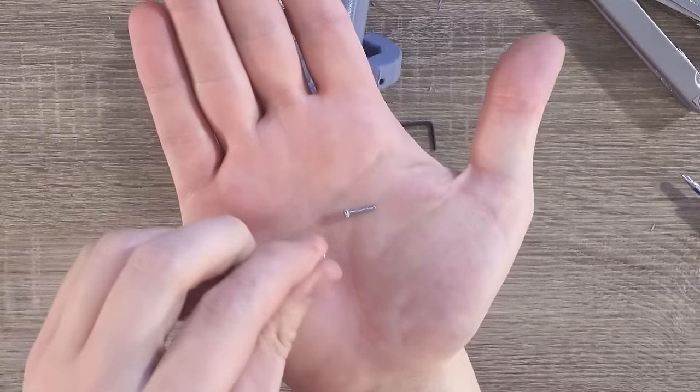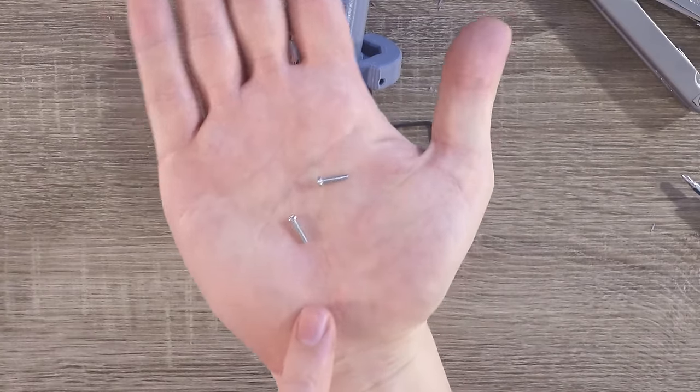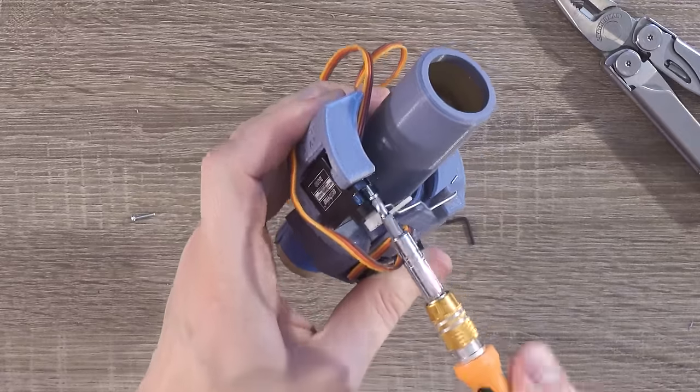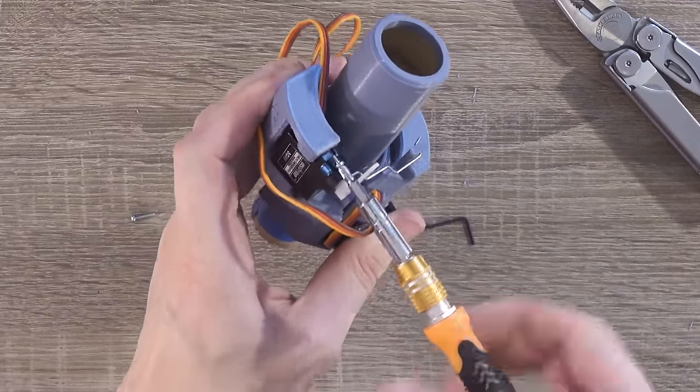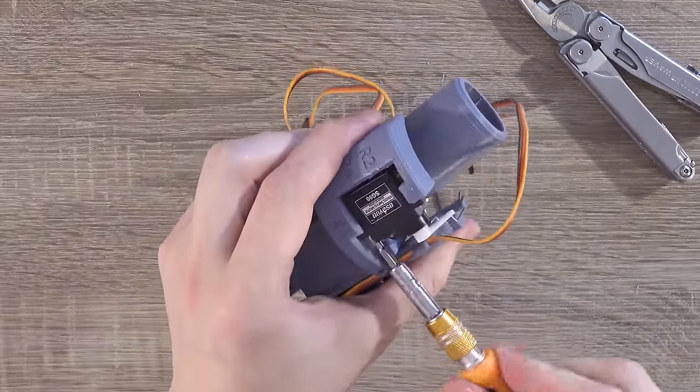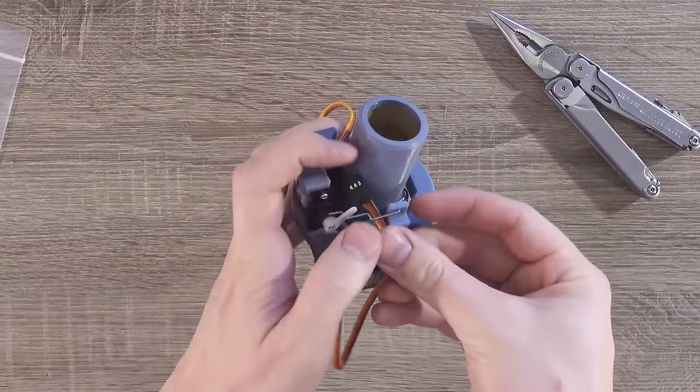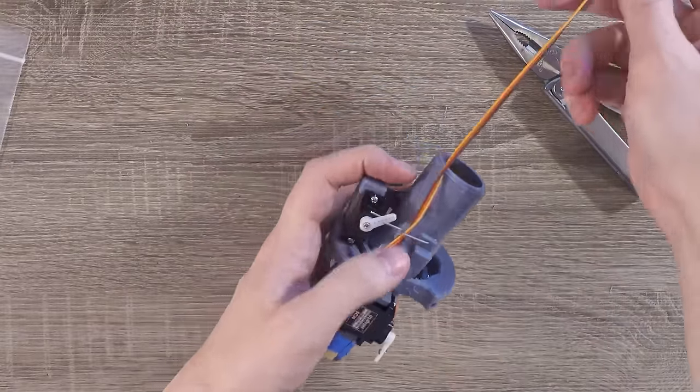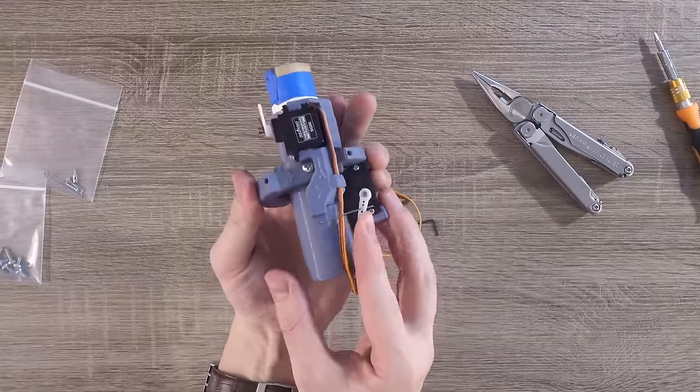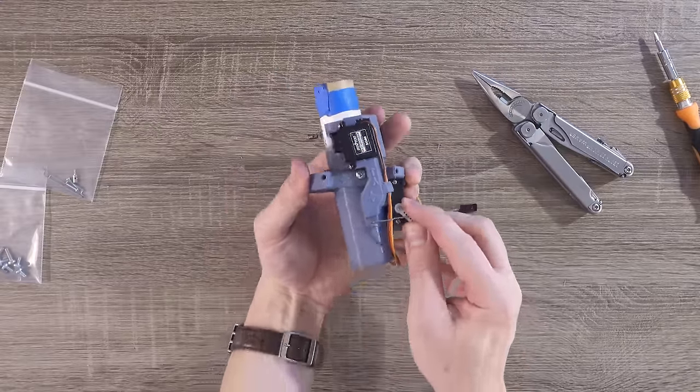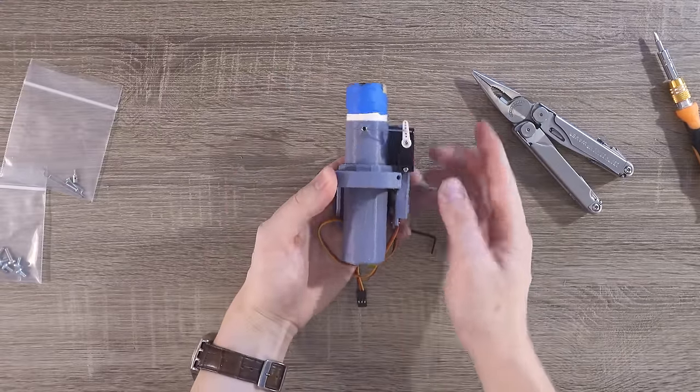From the small parts bag, grab two more of the M2 screws. Using these, secure the top and bottom of the outer gimbal servo, otherwise known as the X-axis servo. Then take the servo cable from the Y-axis, or inner gimbal, and thread it up through the thrust vectoring mount. Now you can manually move the mount to see if your X and Y axes are both working correctly.